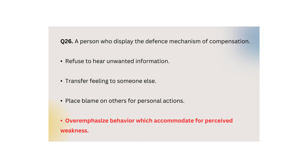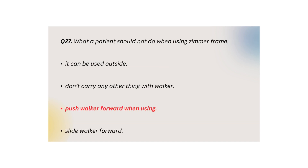Q26: A person who displays the defense mechanism of compensation — refuses to hear unwanted information, transfers feelings to someone else, places blame on others for personal actions, or over-emphasizes behavior which accommodates for a perceived weakness.